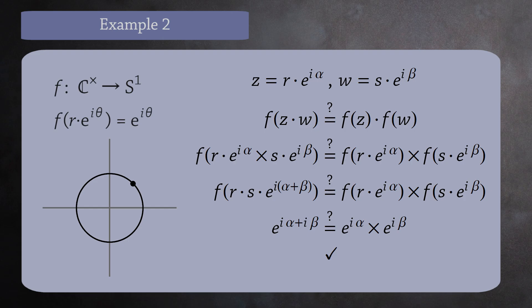It is also onto, because for every point in the circle there are an infinite number of complex numbers which map to it. But for the same reason, this function is not one to one. So while this is a homomorphism, it is not an isomorphism.